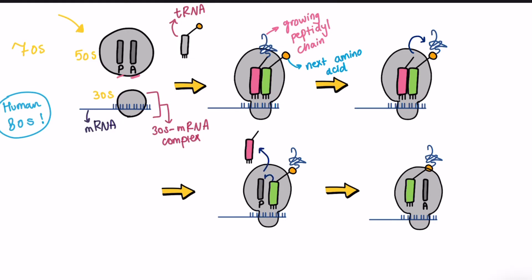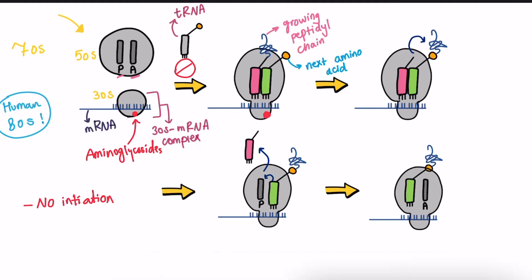Aminoglycosides bind to the 30S part, which prevents the two subunits from combining together, blocking the initiation of the whole process. Their binding also impairs the proofreading process, which ensures no error occurs during translation. Inhibition of this procedure results in incorporation of incorrect amino acids, leading to the production of faulty proteins.